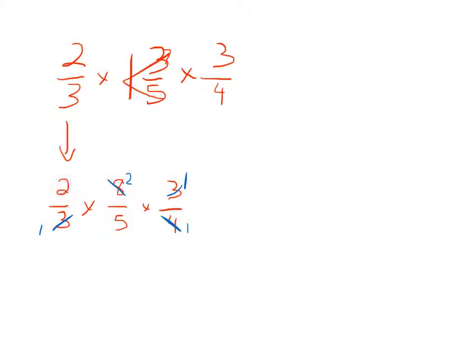So I'm going to do two times two is four, times one equals four. And one times five times one will be five. So the answer here is 4/5.